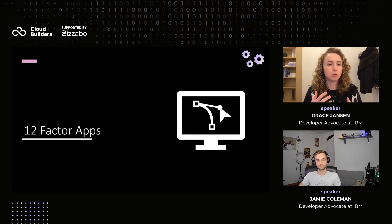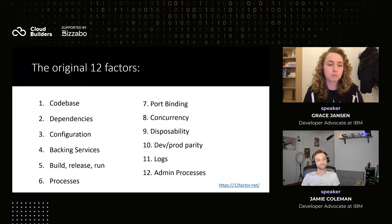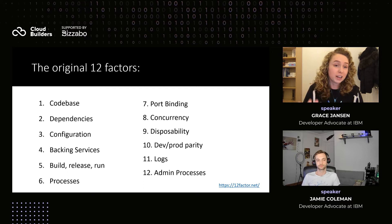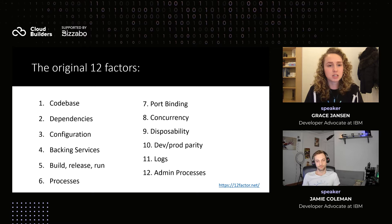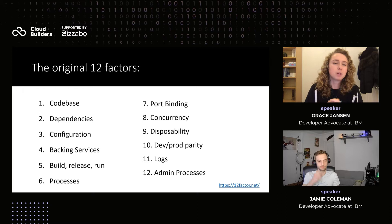You might have come across something called the 12 factor app methodology. This is a methodology that was created by the guys over at Heroku, and it's been adopted widely within the industry as a rulebook — guidelines of how to create cloud native applications. These original 12 factors were created a few decades back. It was a fantastic start for looking at the various aspects of development and how to make an application ready for the cloud. But as technologies progressed and evolved, these factors had to be evolved too.